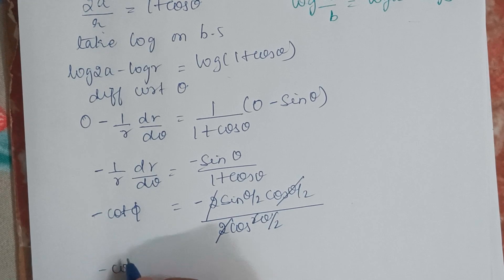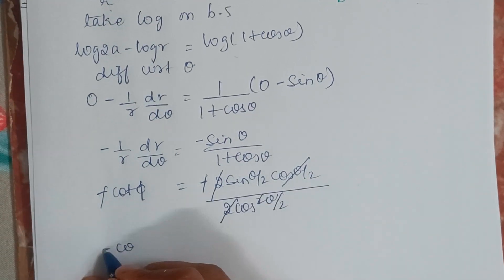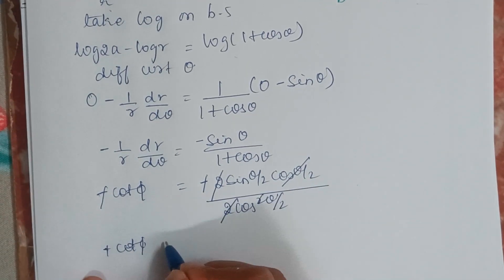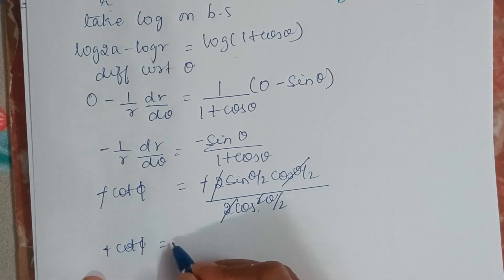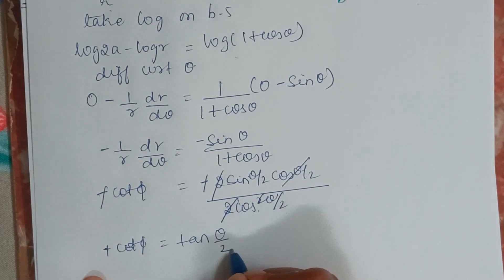cos theta by 2 and cos theta will get cancelled. So minus and minus will also get cancelled. So here cot phi is tan theta by 2.